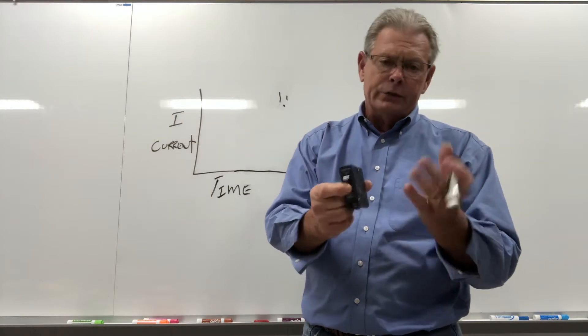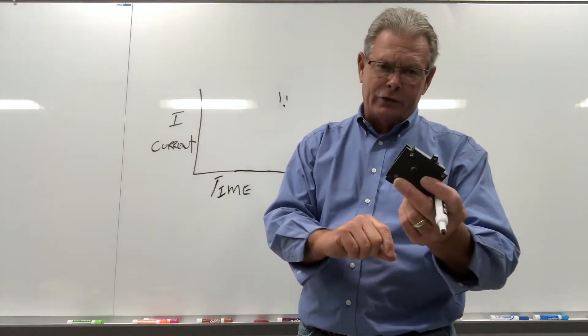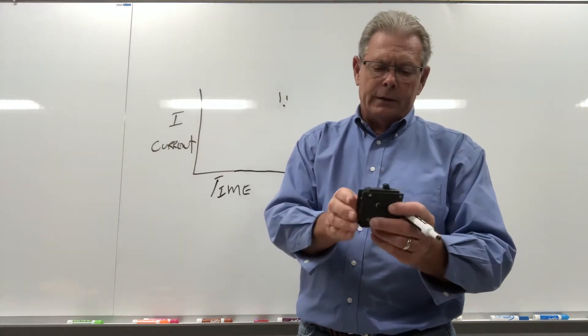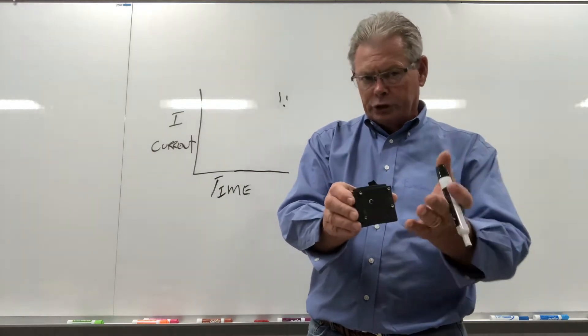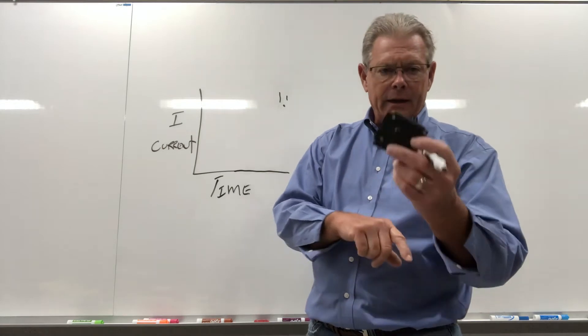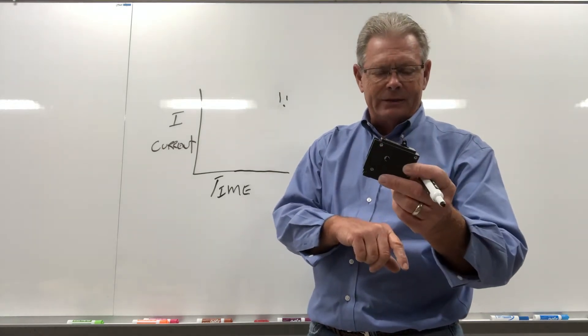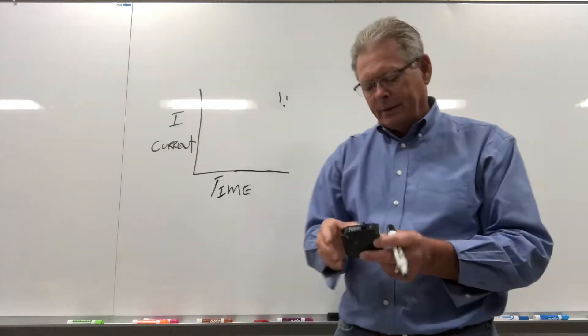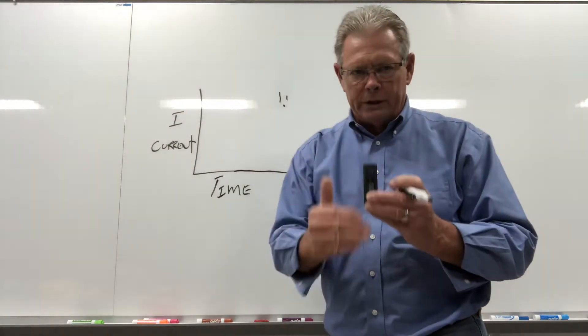So instead of this 15 amp breaker tripping at 15 amps, this thing might trip at 13 or 14. So even though it would be a loaded up circuit, 13 amps on a 15 amp breaker, it's okay until the outside heat gets to it. So outside heat can trip it. But let's talk about what normally trips these breakers.